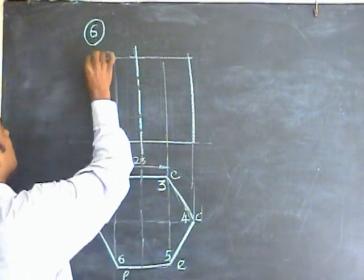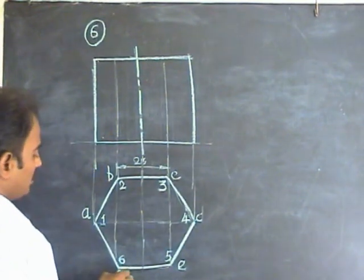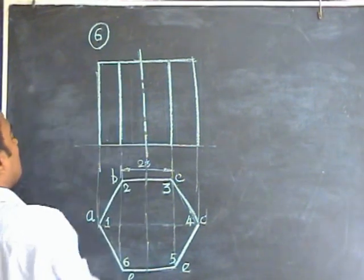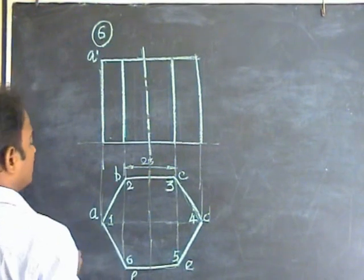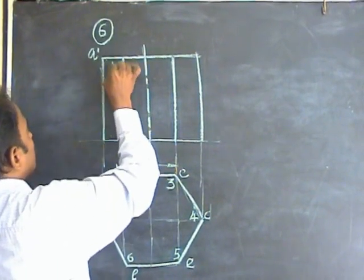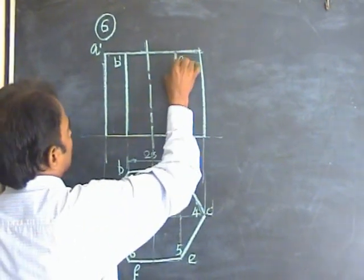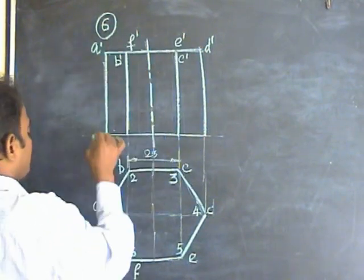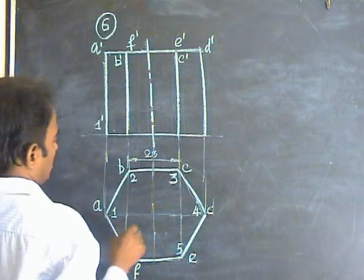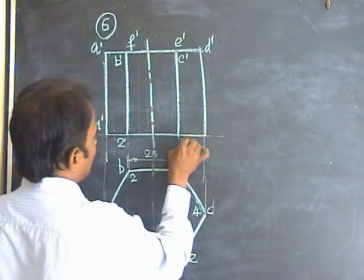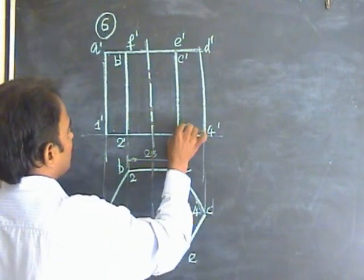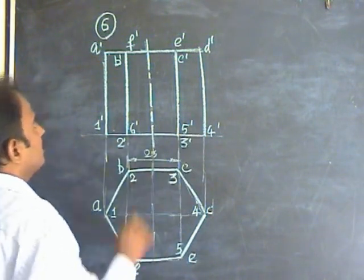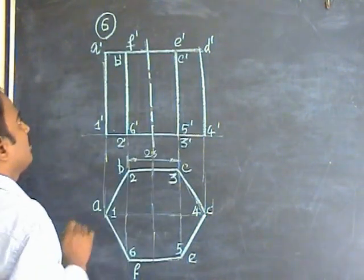We can name the points on the front view as well. These two edges are visible, so make two dark lines here. The points at the top start with A dash, then B dash, C dash, D dash, E dash, F dash. Similarly, mark 1 dash, 2 dash at the bottom, 3 dash at the bottom, 4 dash at the top, 5 dash at the top, and 6 dash at the top. Points on the top are visible, the bottom are invisible.